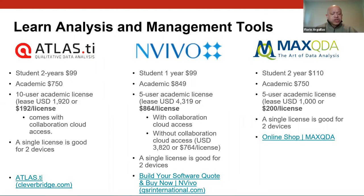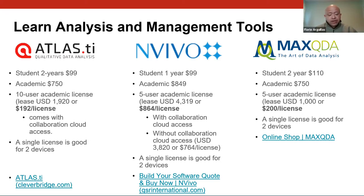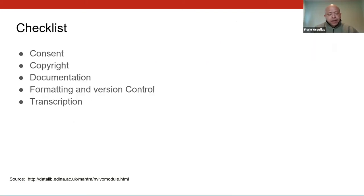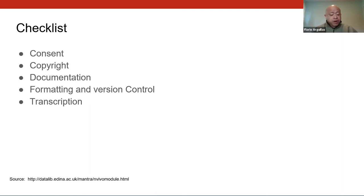Learn tools that would help in managing, organizing, and finding themes and patterns in your data prior to data collection. Three popular software packages are Atlas.ti, NVivo, and MaxQDA. Learn the software prior to collecting because you will be analyzing data concurrently with collection. Another way to improve quality is to provide additional information that improves accessibility and usability of data. The list includes consent, copyright, documentation, formatting, version control, and transcription.